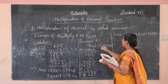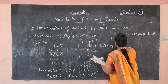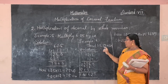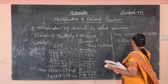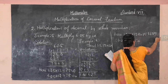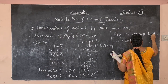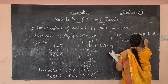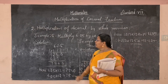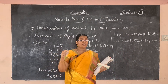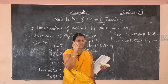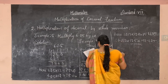Now we need the decimal value of 1.213 into 125. How many decimal places are after the decimal point? Three places. So from the right side, count three places: one, two, three. The answer is 151.625.